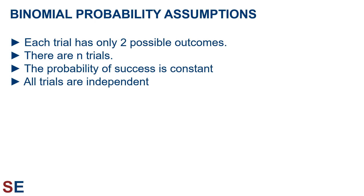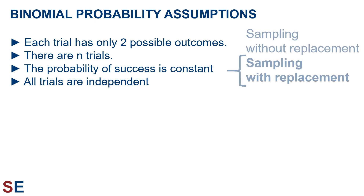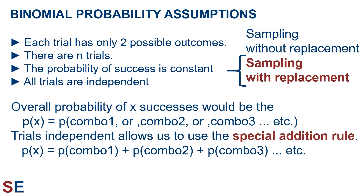The third assumption — the probability of success being constant — technically means that we would always be doing sampling with replacement in any scenario measuring individuals in a population. If we did sampling without replacement, the probability of success would change, so our math wouldn't work. However, if our population is large enough, even sampling without replacement should be fine. The fourth assumption, the trials being independent, will allow us to use the special addition rule.